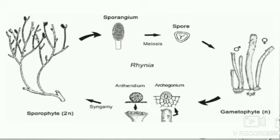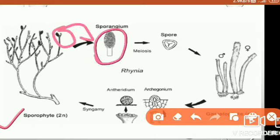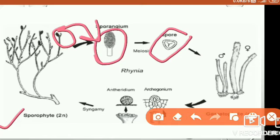Let's see the life cycle of Rhynia. The sporophyte is the diploid plant body bearing sporangia at the top. After meiosis, a tetrad condition occurs, producing spores. These spores germinate to form a young gametophyte, which forms male and female gametophytes. Fertilization gives rise to a new diploid sporophytic plant body, completing the life cycle.